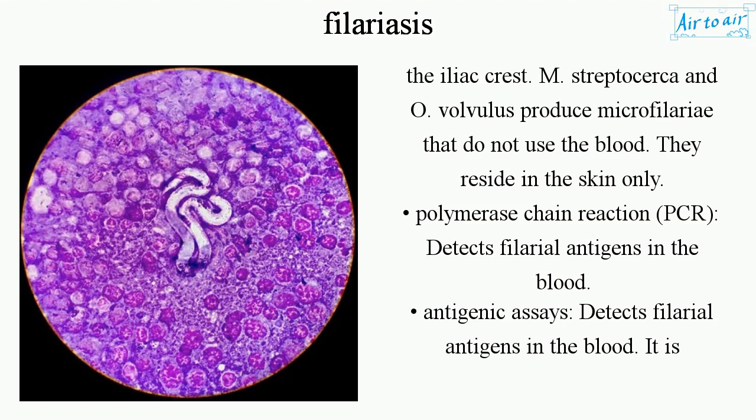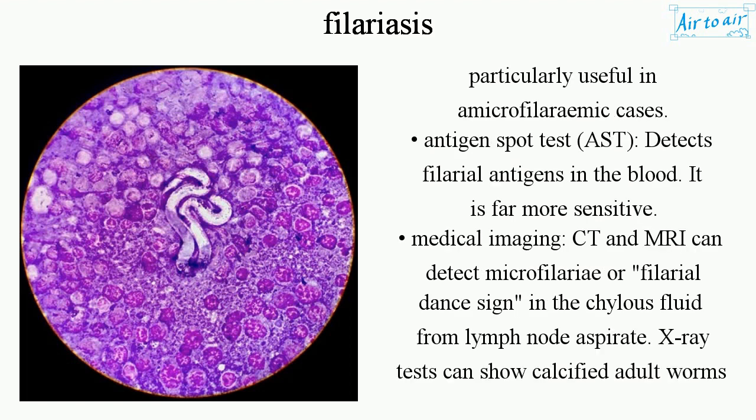Antigenic assays detect filarial antigens in the blood. It is particularly useful in amicrofilaremic cases. Antigen spot test (AST) detects filarial antigens in the blood and is far more sensitive. Medical imaging: ultrasound and MRI can detect microfilariae or the filarial dance sign in the chylous fluid from lymph node aspirate. X-ray tests can show calcified adult worms in lymphatics.